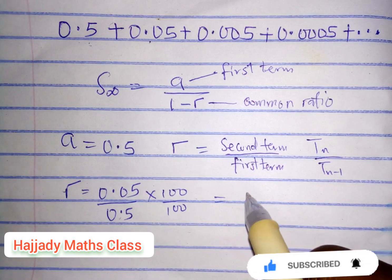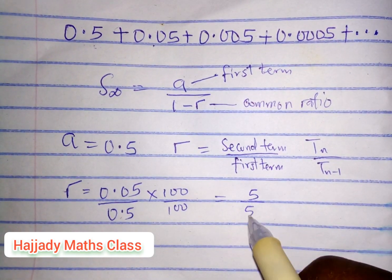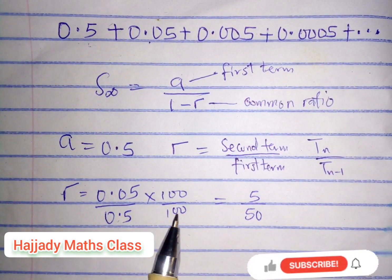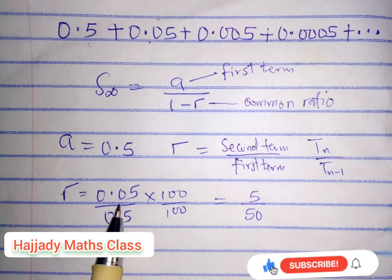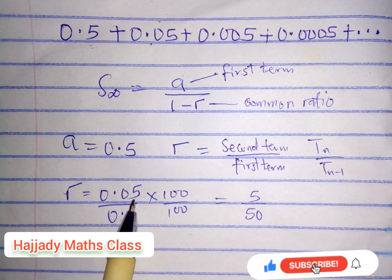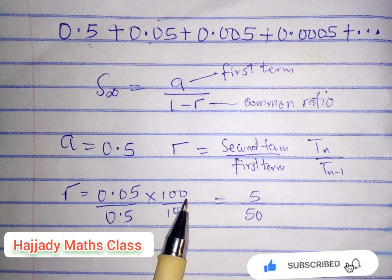So 0.05 times 100 gives 5, from this we have 5 over 50. This is the way of neutralizing, because here we are having two digits.